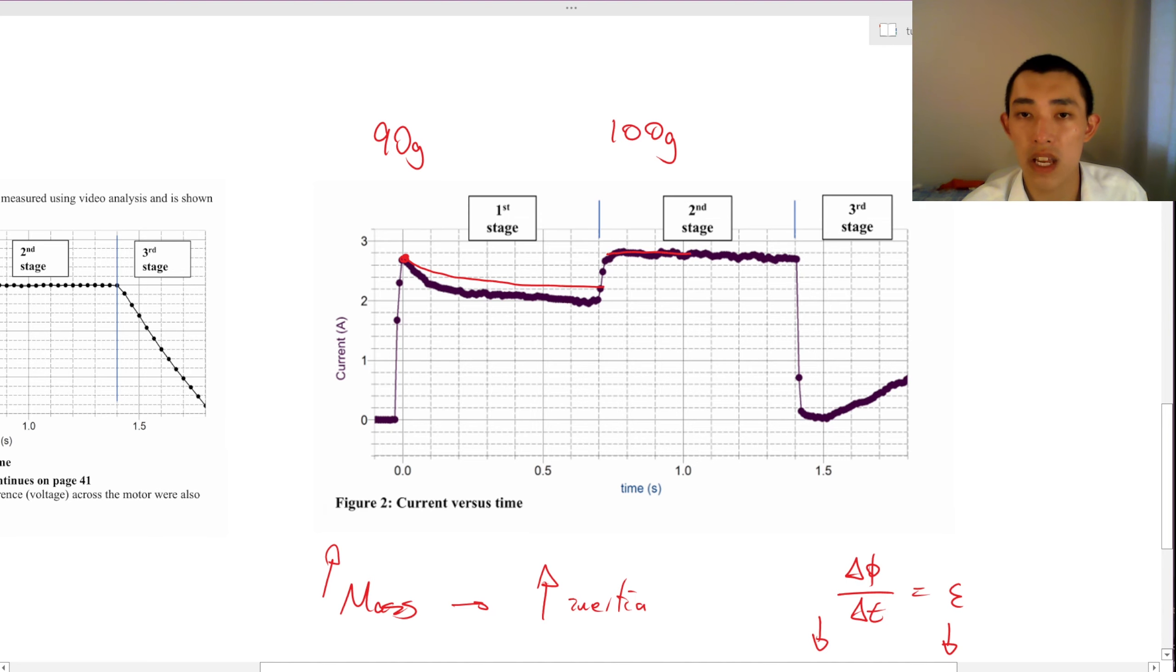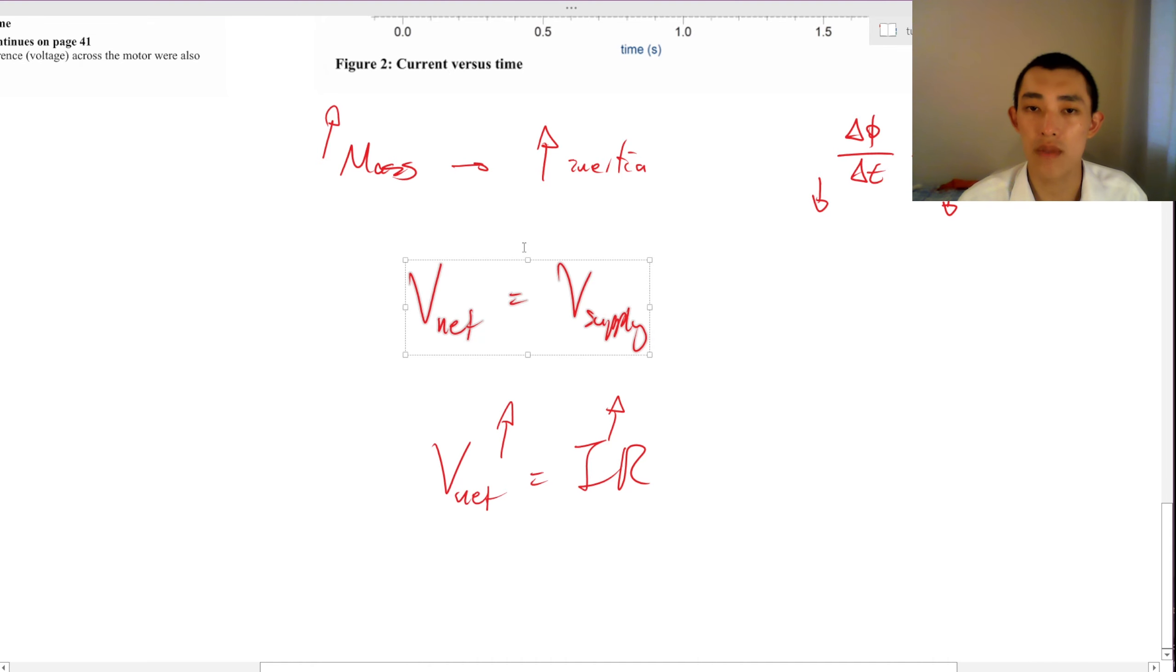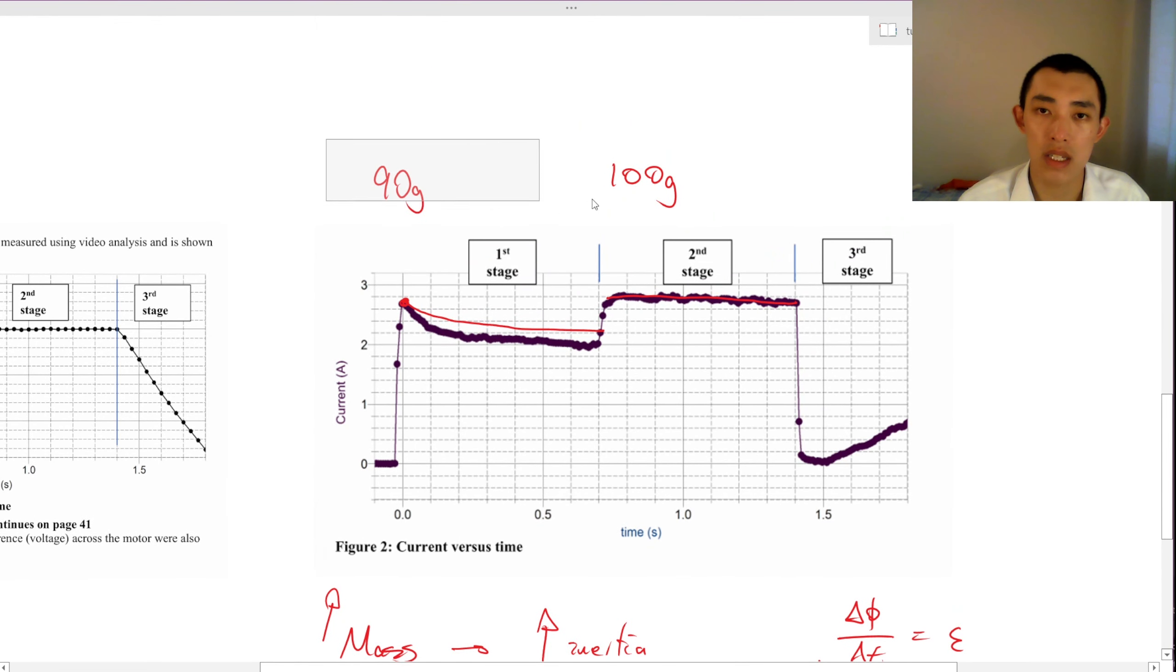In this stage, in the second stage, it should still be constant because there's no back EMF. V net is equal to V supply. So that should be the same no matter whether you're 90 or you're 100 grams.